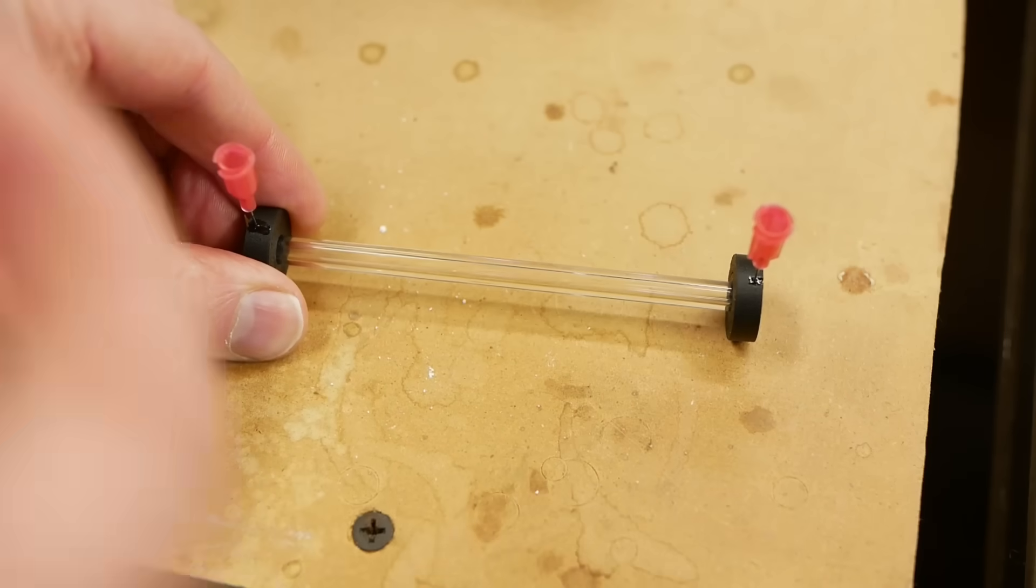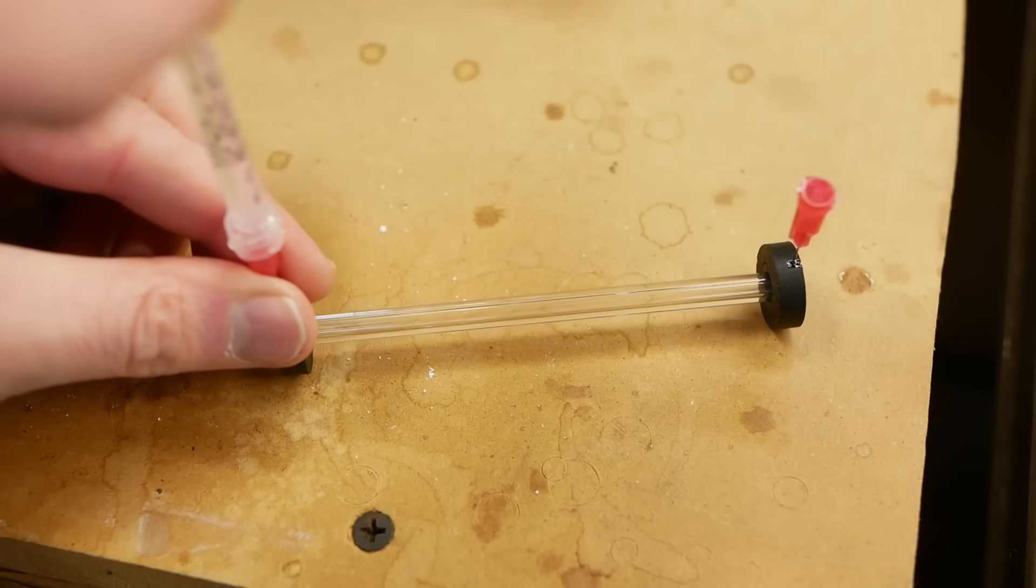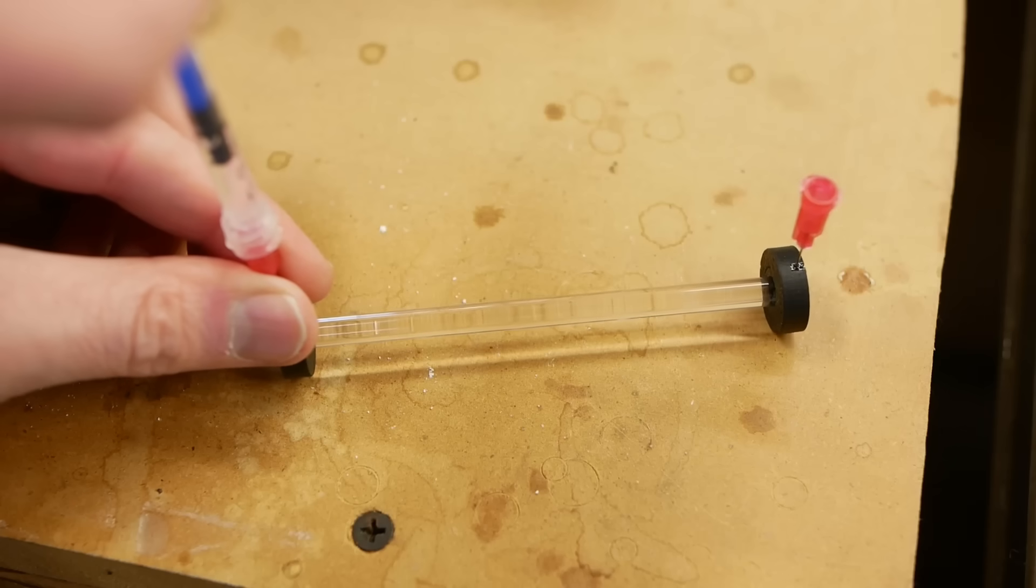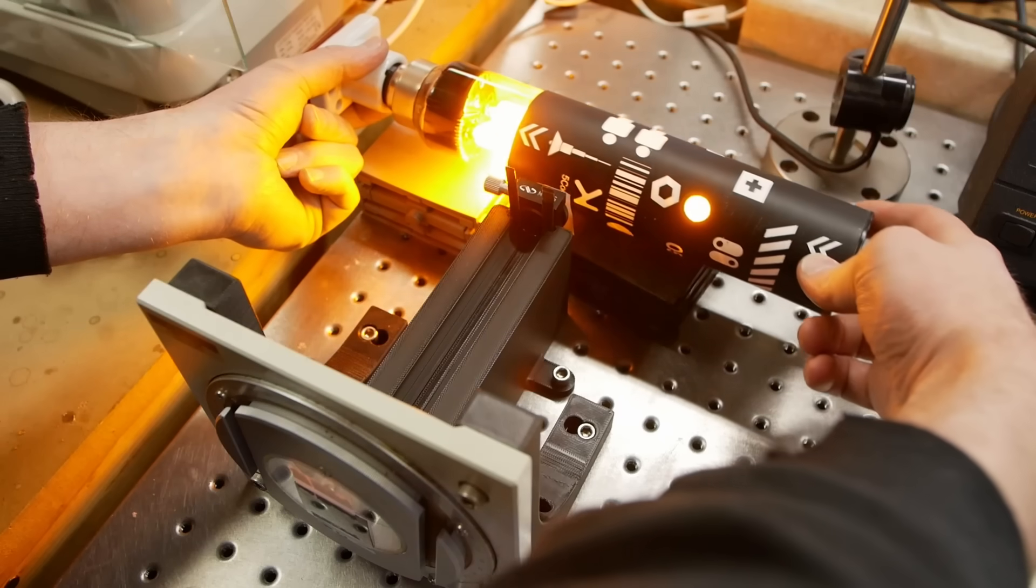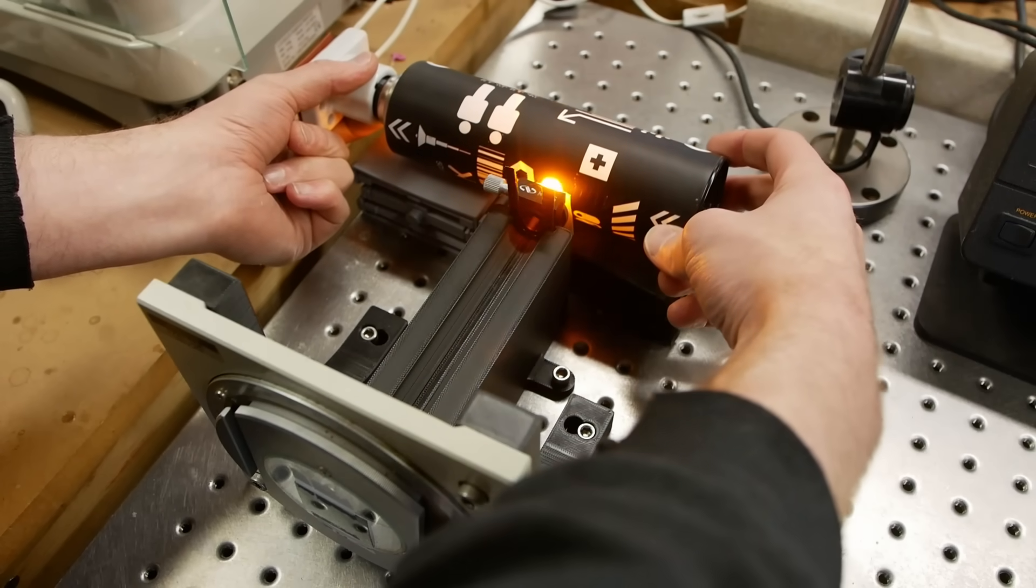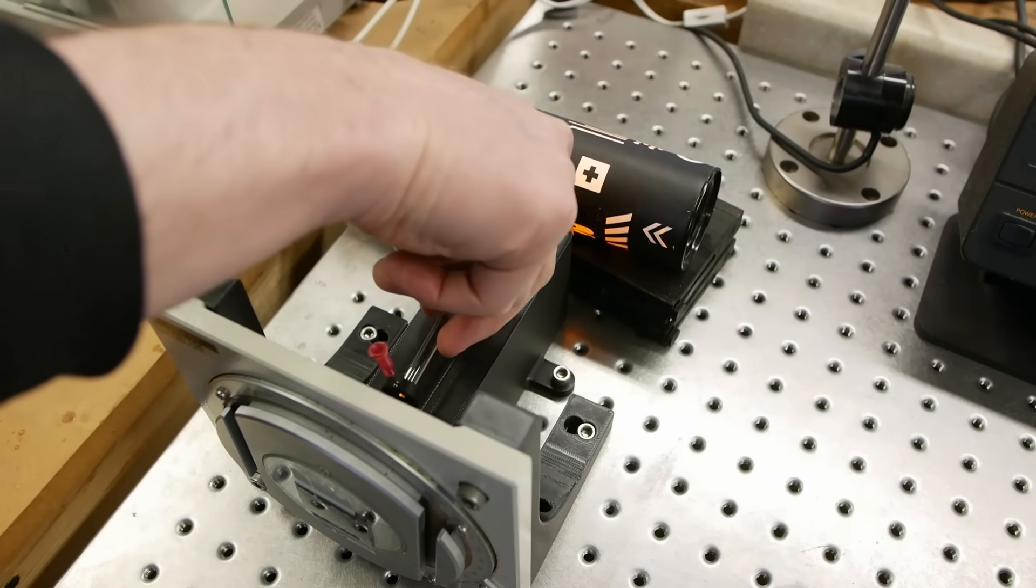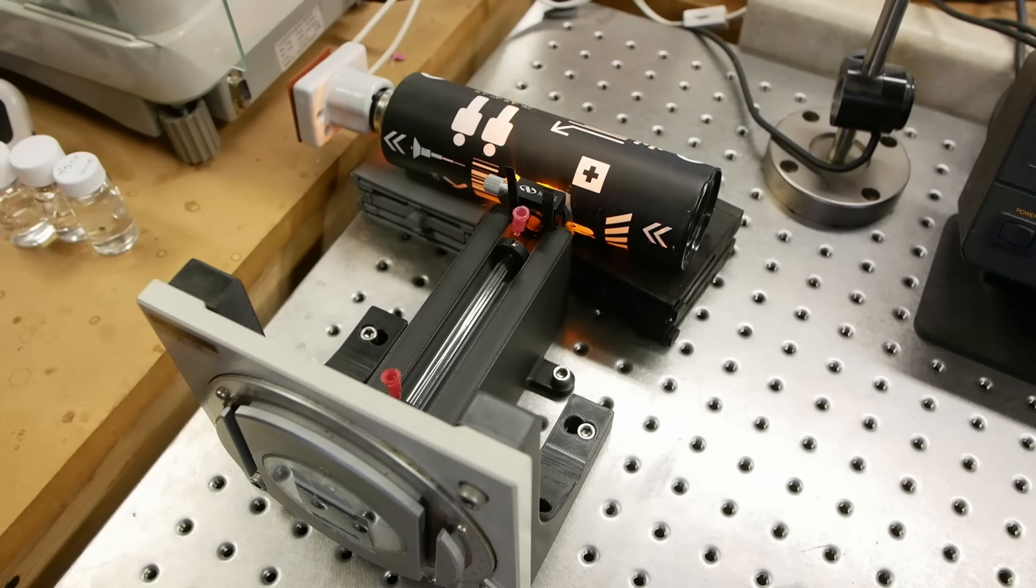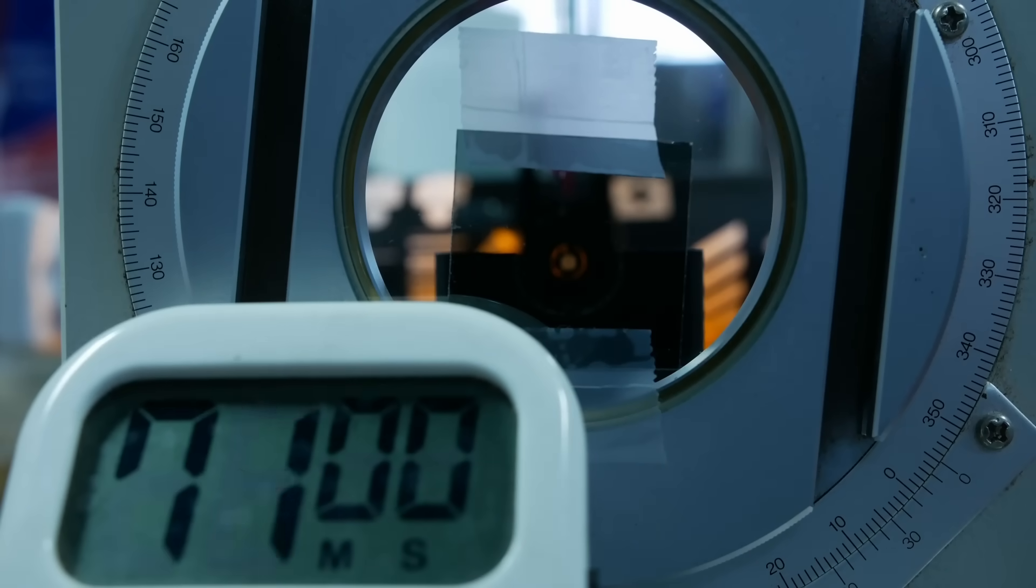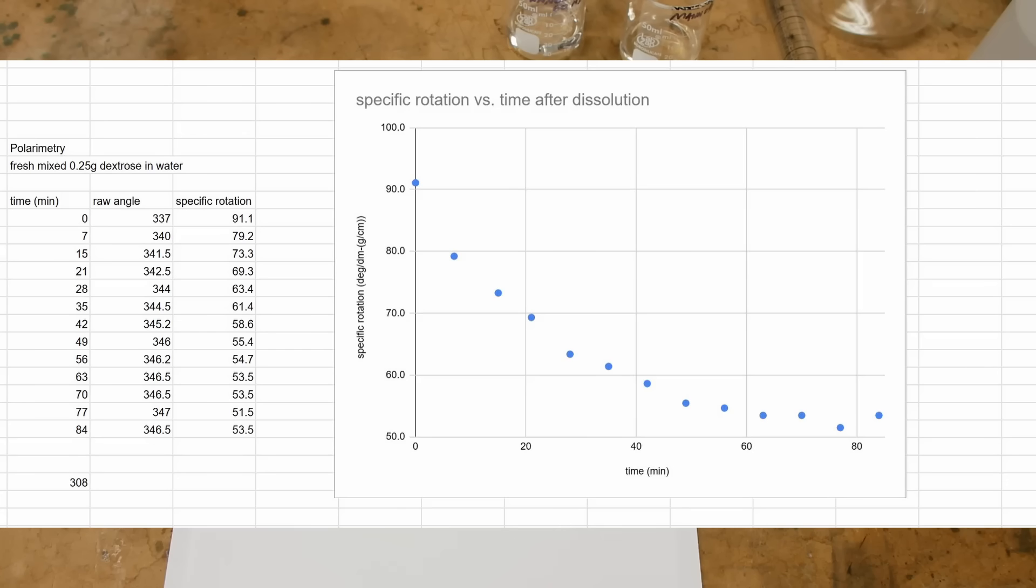So I built a polarimeter, which measures the optical rotation of anything you put in there. And I was surprised that when I mixed up some glucose from the store, just to check if my polarimeter was working, it returned a value that was completely wrong compared to the textbook. This is very strange because it was way off. It was not like a small calibration error. And I mixed up a fresh batch and got the same wrong answer again. So I left it sitting there for a day, and when I came back the next day, I measured it, and it had exactly the correct value.